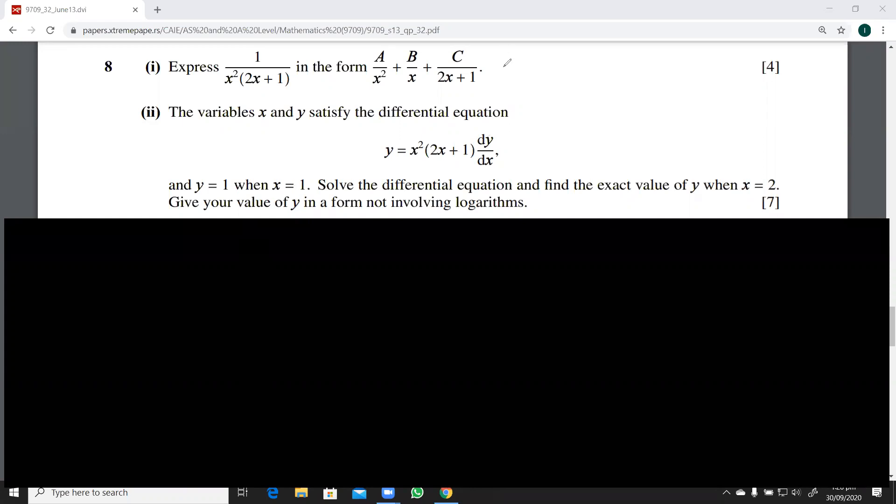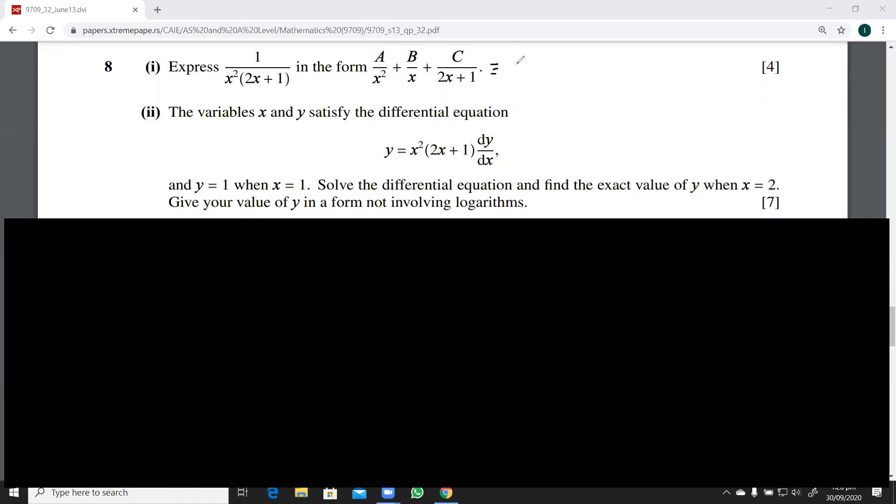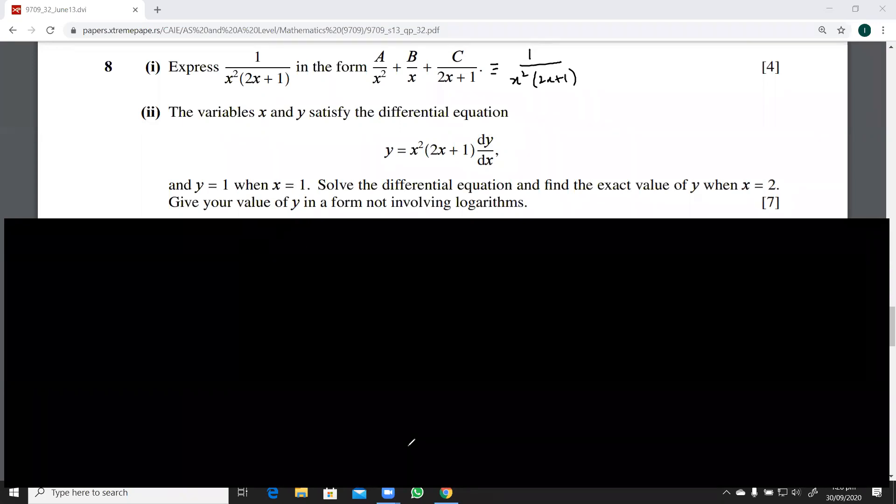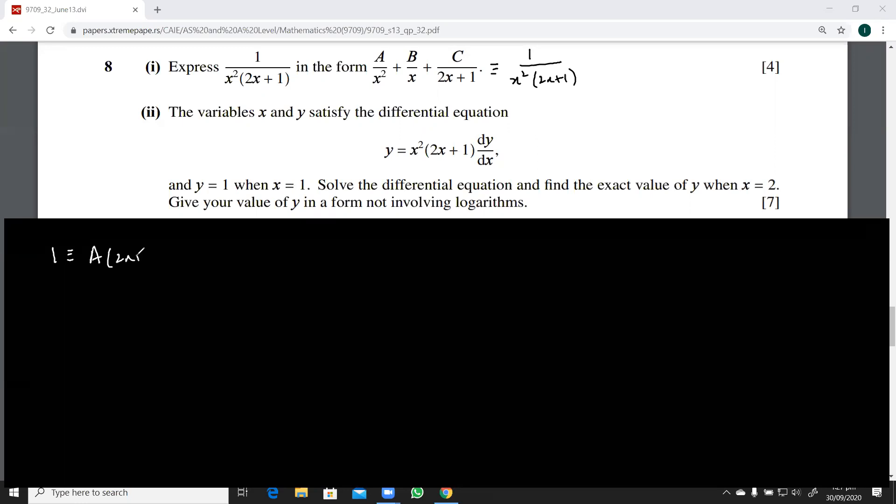I can do it here. So this is equal to 1 over x squared into 2x plus 1. So I think I should do it here. So you have your 1 equal to A into 2x plus 1 plus Bx into 2x plus 1 plus Cx squared.